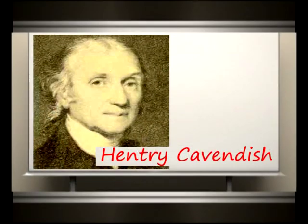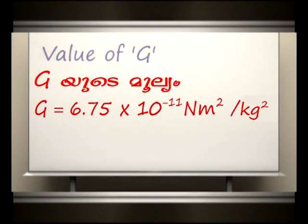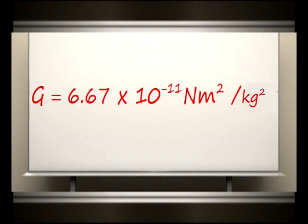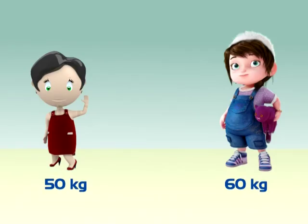What is the value of G? In the year 1789, Henry Cavendish determined the value of G experimentally. He found G = 6.75 × 10⁻¹¹ N·m²/kg². At present, the value of G has been more accurately calculated to be 6.67 × 10⁻¹¹ N·m²/kg². Let us try to solve a problem.